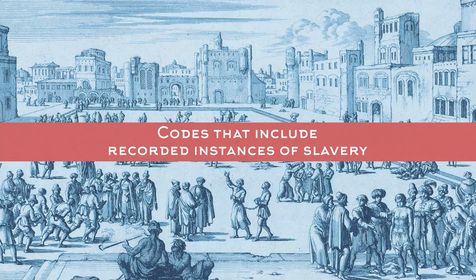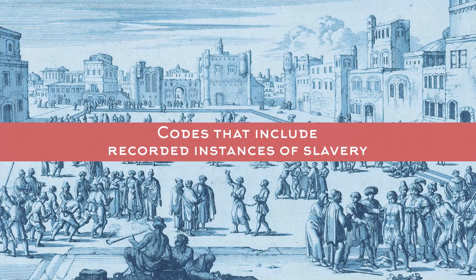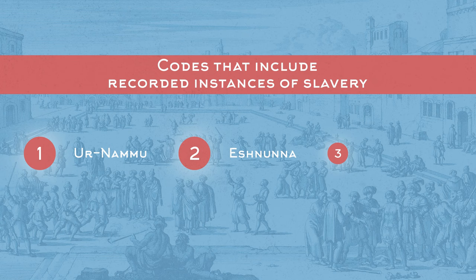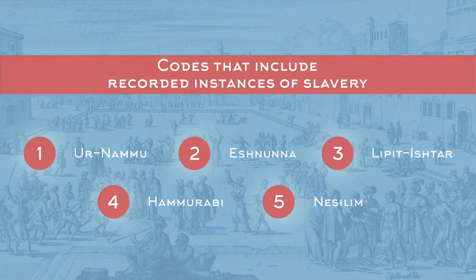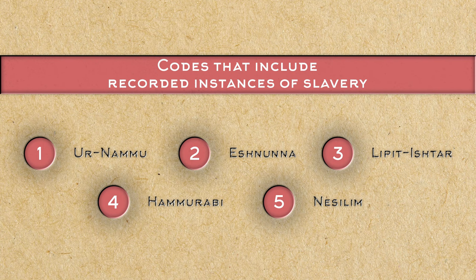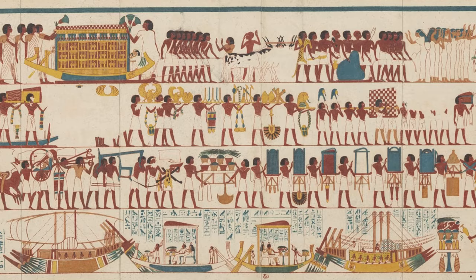In early civilizations, there are legal codes that include some of the first written, recorded instances of slavery, all of which are from different but similar periods in ancient Mesopotamia. The main five we'll be looking at are the Code of Ur-Nammu, the Code of Eshnunna, the Code of Lipit-Ishtar, the Code of Hammurabi, and the Code of Nesilim. Each was inscribed on ancient tablets or pieces of stone and contained multiple mentions and legal proceedings to do with slaves, suggesting it was a key part of these ancient civilizations' workings.